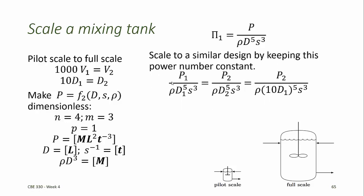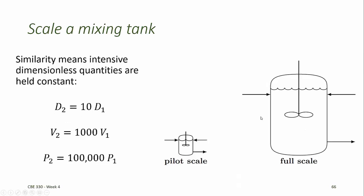If we keep S constant across scales and assume the fluid density is the same at pilot and full scale, we can find the ratio of power for the full scale to the pilot scale. We already determined that D_2 = 10 · D_1, so replacing D_2 with 10·D_1 and noting it is raised to the fifth power, solving for P_2 / P_1 gives us that the power required at full scale is 10^5 times the power required at pilot scale. While the diameter increases by a factor of 10, the volume increases by 1,000, and the power required for the mixer increases by a factor of 100,000, ensuring the two processes are similar.